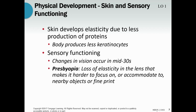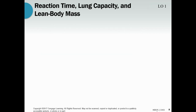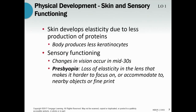As your lens gets harder, focusing becomes more difficult. If it gets hard enough, you might develop cataracts, which means the lens has completely hardened and now no light is getting through — you're essentially blind, not because of your retina but because light can't get through. There are surgeries where they can remove your natural hardened lens and insert an artificial lens to allow you to see better.